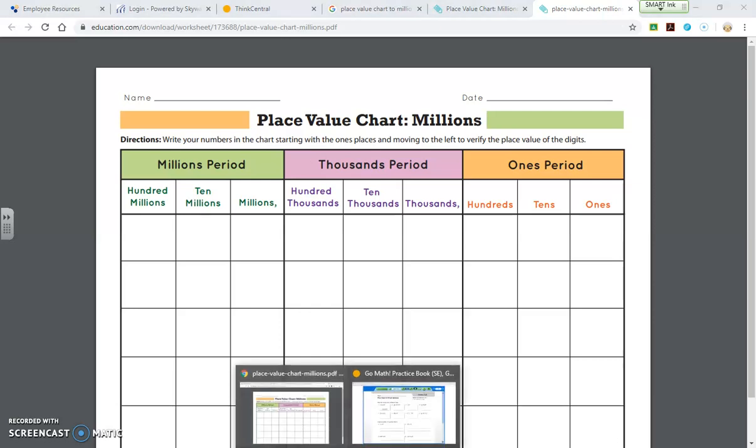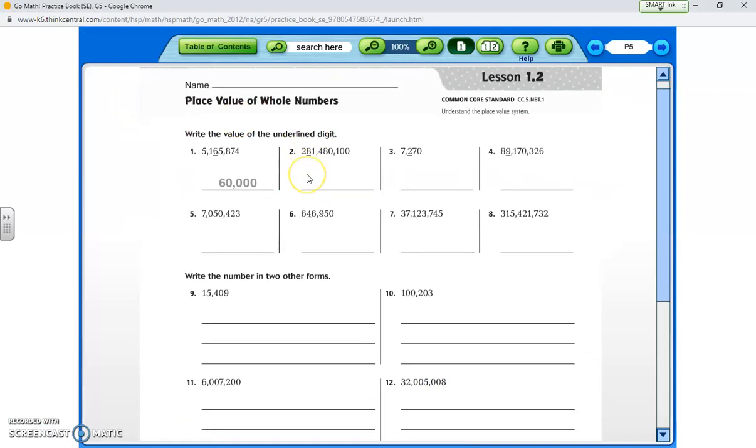Because what we see here in our homework, for the first eight problems, we're talking about just the value of the underlined digit. Value is always going to be written as a number, not a word. So in this case, we're looking for the value or the standard form of each digit. In the first one, they have it done for us. But I'm going to read it to you.